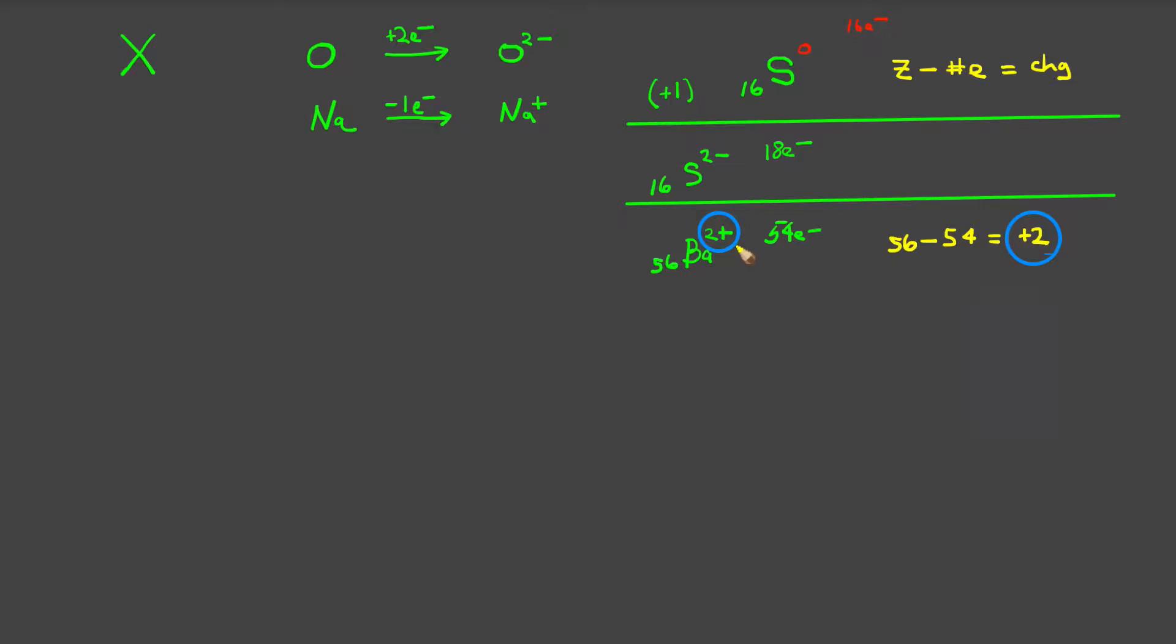By the way, when you do write the charge on an ion, the charge is shown after the number. This is still pronounced minus 2, or barium with a plus 2 charge, but the 2 is nevertheless written after the number.